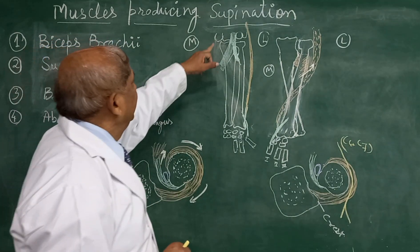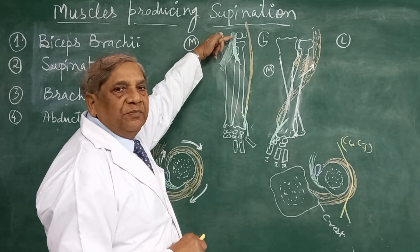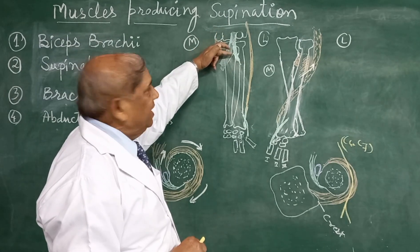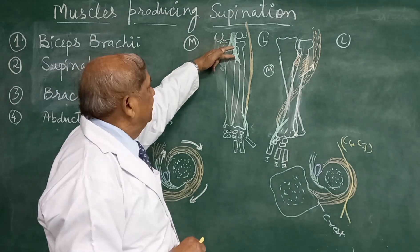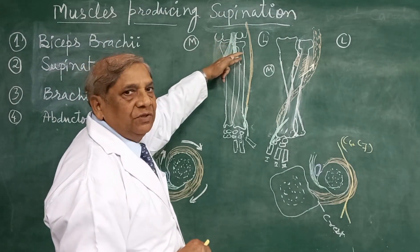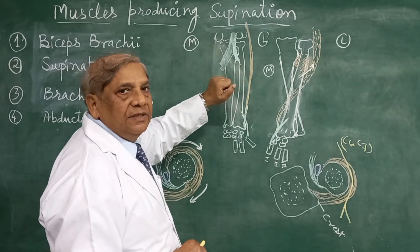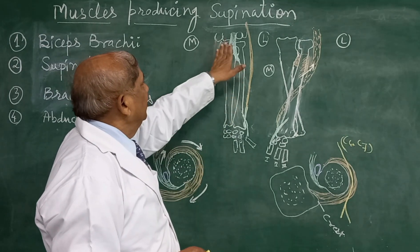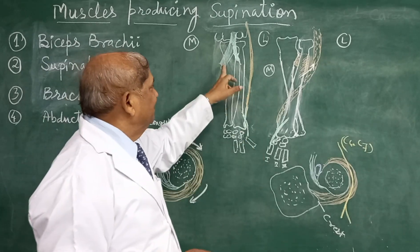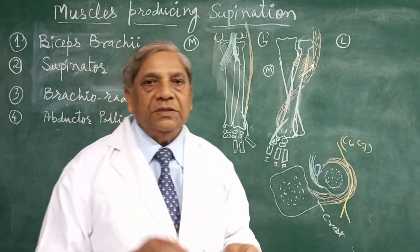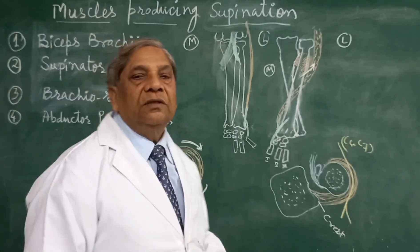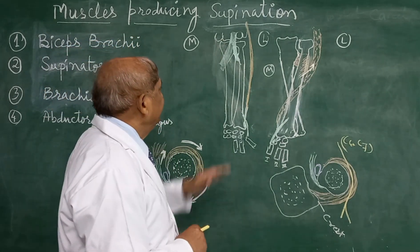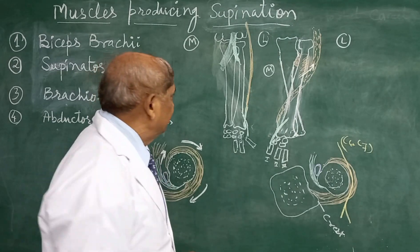Let us see the biceps brachii. This is the tendon of the biceps brachii coming from the arm in front of the elbow. It will divide into two parts: the strong tendon will continue and get attached to the dorsal part of the radial tuberosity. A bursa will interpose between the two to avoid friction, and there will be an aponeurotic sheet going and fusing with the undersurface of the deep fascia covering the muscles on the medial side, which take common origin from the medial epicondyle. This is how the insertion of the biceps brachii takes place.